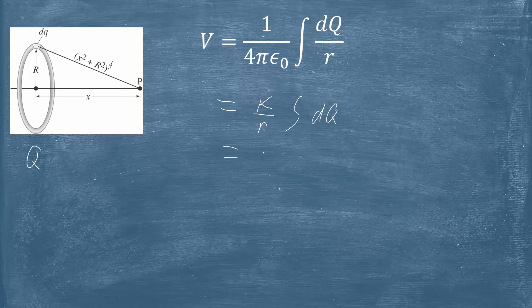Well, if this ring has total charge Q on it, adding up all of the little bits of charge better give me the total charge, so I get kQ over r. And if we're interested in V as a function of x, we can go ahead and substitute in for r, and then we're going to have kQ over (x² + R²)^(1/2), big R by the way is the radius of the ring there, so that's constant, this is just going to be as a function of x.